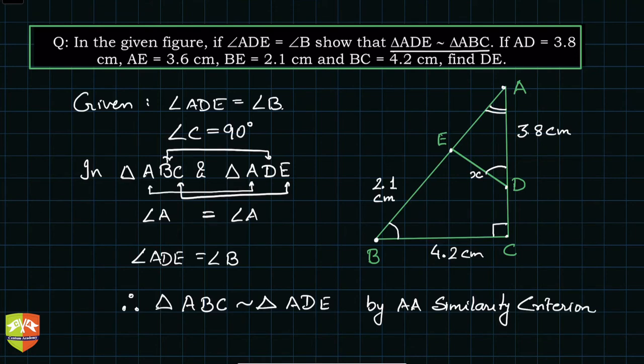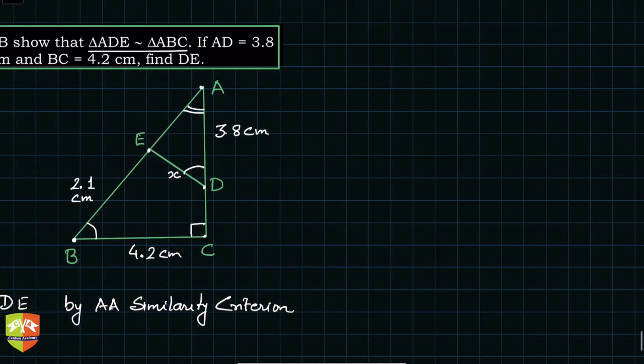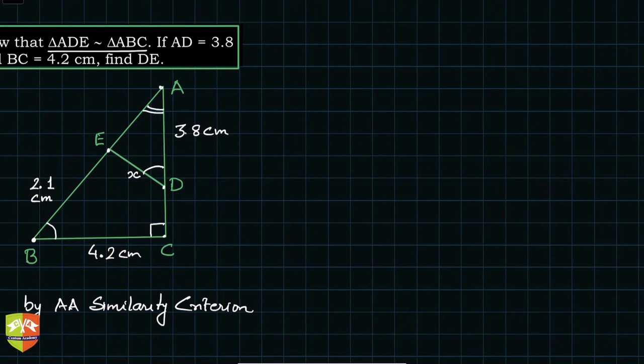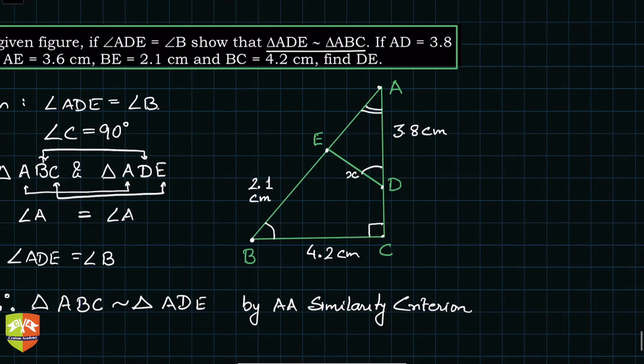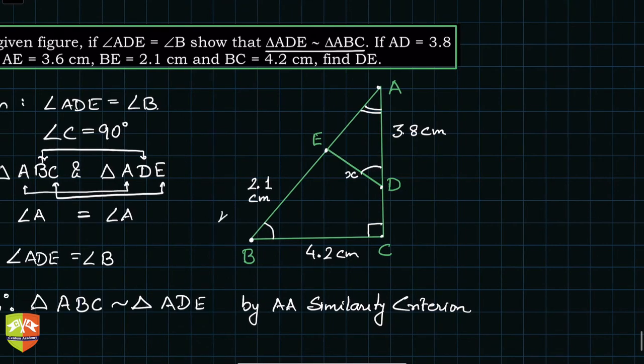Correct. So when they are similar, then we can go for equality of the ratios of the sides. Therefore, what can we say? First of all, what is given? EB is given, so this length is given, and we have to find out X.